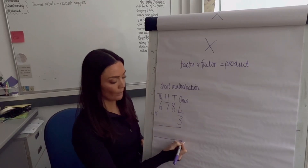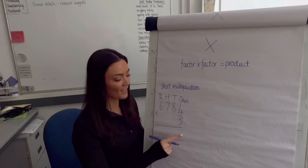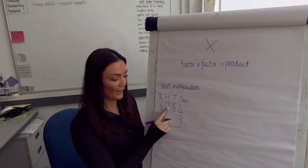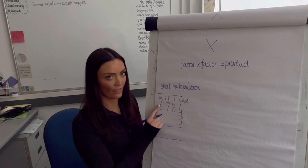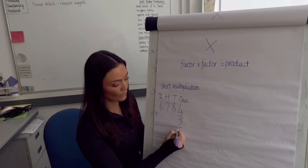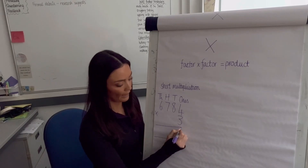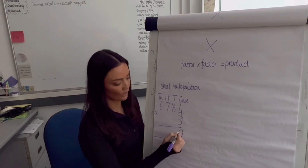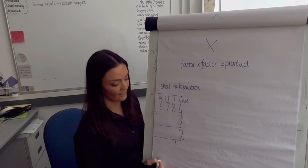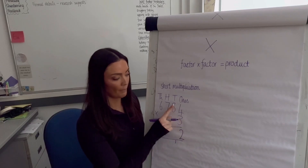We're going to start by multiplying our factor by our ones, then our tens, then our hundreds, then our thousands. Starting with 3 multiplied by 4, which equals 12. We can't fit 12 into one column, so we put the 2 down and exchange those 10 ones for one 10 underneath.